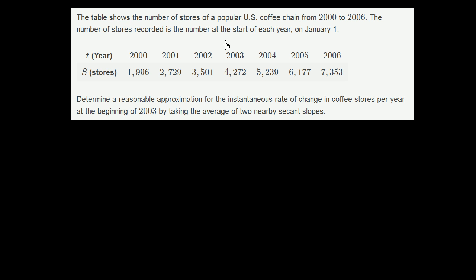The table shows the number of stores of a popular U.S. coffee chain from 2000 to 2006. The number of stores recorded is the number at the start of each year on January 1st. So in 2000, there's 1,996 stores. In 2005, 6,177, so on and so forth.